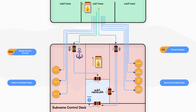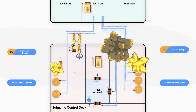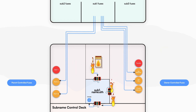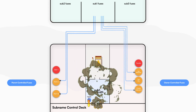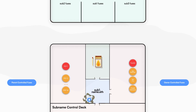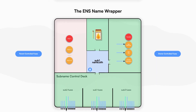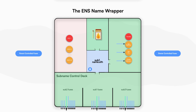These steps can also be performed all in one fell swoop. In one transaction, the parent was able to emancipate and lock the subname and at the same time burn some additional fuses.